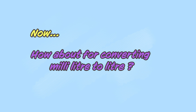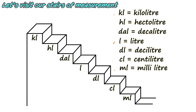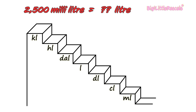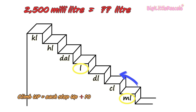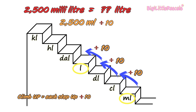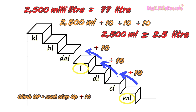Now, how about converting milliliter to liter? Let's go back to our stairs of measurement. This is the stair of unit of measurement with each name for each step. Let's convert 2,500 milliliters to liters. First, find where is the milliliter — there it is. Then find the liter. You need to jump up from milliliter to liter. Remember the formula: as you are climbing up, each step you jump up, you need to divide by 10. 1, 2, and 3 jumps. So 2,500 divided by 10, by 10, and by 10 — it gives you 2.5 liters. So 2,500 milliliters equals to 2.5 liters.